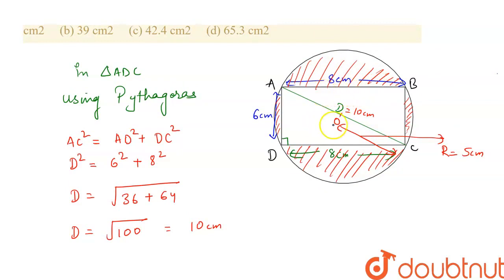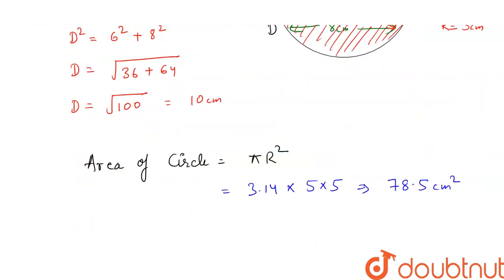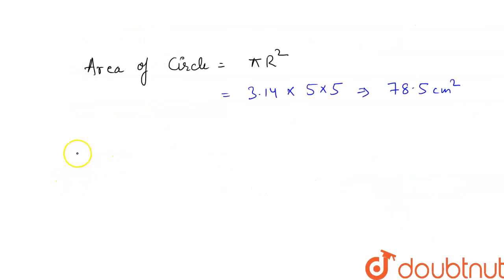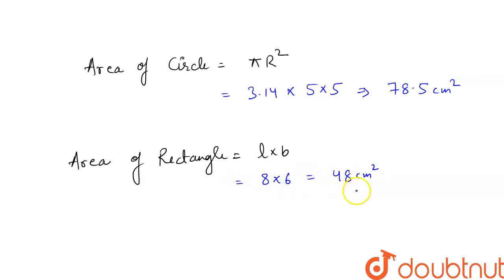We need to subtract the rectangle's area to find the remaining portion's area. First, let's find the area of rectangle = length × breadth. Length is 8 cm, breadth is 6 cm, so 8 × 6 = 48 cm² is the area of the rectangle.